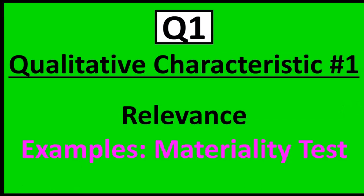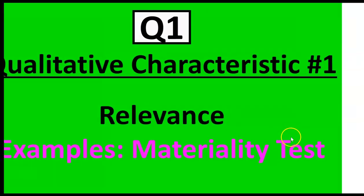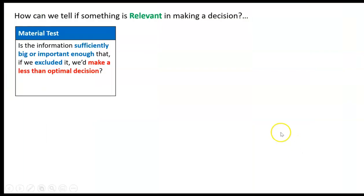The first test to figure out whether something is relevant — basically, whether it's going to help us make an informed or good decision — is the materiality test. It means: is the particular piece of information sufficiently big or important enough that if we excluded it, we'd make a less than optimal decision?